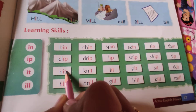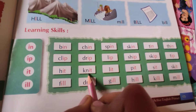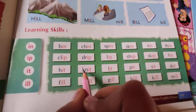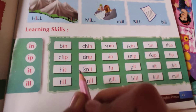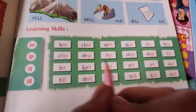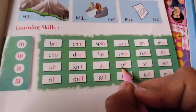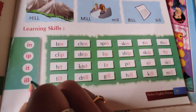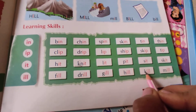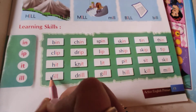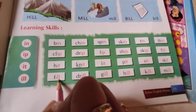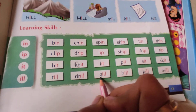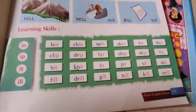I-T: hit, knit — students, इसका खास याद रखना, 'k' का sound silent है, knit बोलना. Lit, pit, sit, skit. I-L-L: F लगा देते हैं तो fill, DR लगाते हैं तो drill, gill, hill, kill, mill.